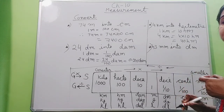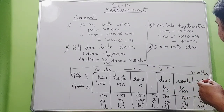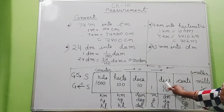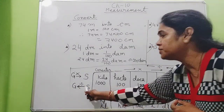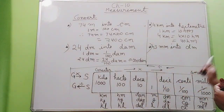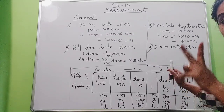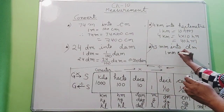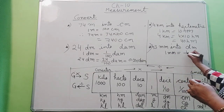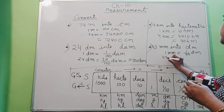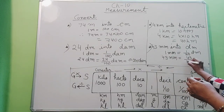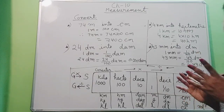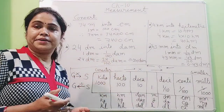Next: convert 43 millimeters into decimeters. Millimeter is smaller and decimeter is greater, so we are moving from smaller to greater — 2 jumps — and we divide by 100. Standard conversion: 1 millimeter equals 1/100 decimeter. Therefore 43 millimeters equals 43/100 decimeters, which equals 0.43 decimeters. This decimal conversion was covered in a previous video. Thank you.